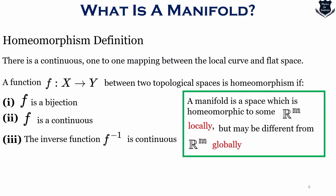A manifold is a space which is homeomorphic to some Rᵐ locally, but may be different from Rᵐ globally — that global space is called an ambient space. We are able to describe the manifold using a set of M local coordinates. However, if the manifold is not homeomorphic globally, then we have to use several local coordinates, which are used in case of a transition. The one-to-one mapping is called homeomorphism only when three conditions are satisfied: the function f should have a bijection, it should be continuous, and the inverse of the function should also be continuous.